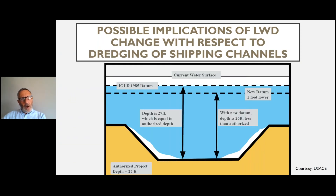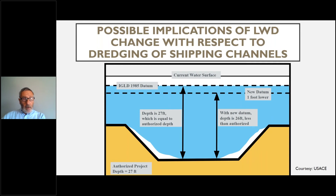Lowering the low-water datum by a foot, however, would mean that the maintained channel depth would not be as deep as the authorized depth. This diagram created by the Corps of Engineers shows that a channel authorized to be 27 feet deeper than low-water datum would only be 26 feet deeper. Therefore, either the channel could be dredged deeper, or the authorized depth could be adjusted to reflect the change in low-water datum.